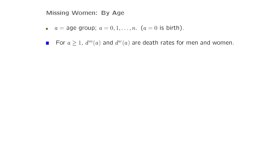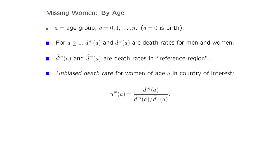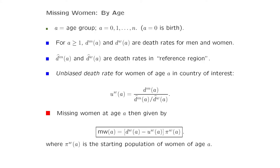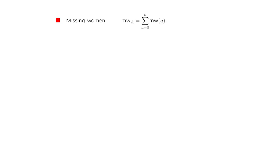So we computed these. At any given age A (where A=0 is birth), you take the death rate of males D_M(A) and the death rate of females D_W(A) in the area of interest. What we assume the unbiased death rate should be is the death rate of males in India divided by the relative ratio of male-to-female death rates in the reference country. So if in developed countries the ratio is one-to-one, then the unbiased death rate of women in India should just be the male death rate in India. You do this by age group, compare what the actual death rate of women is to what it should be, multiply by population, and sum up to get total missing women.